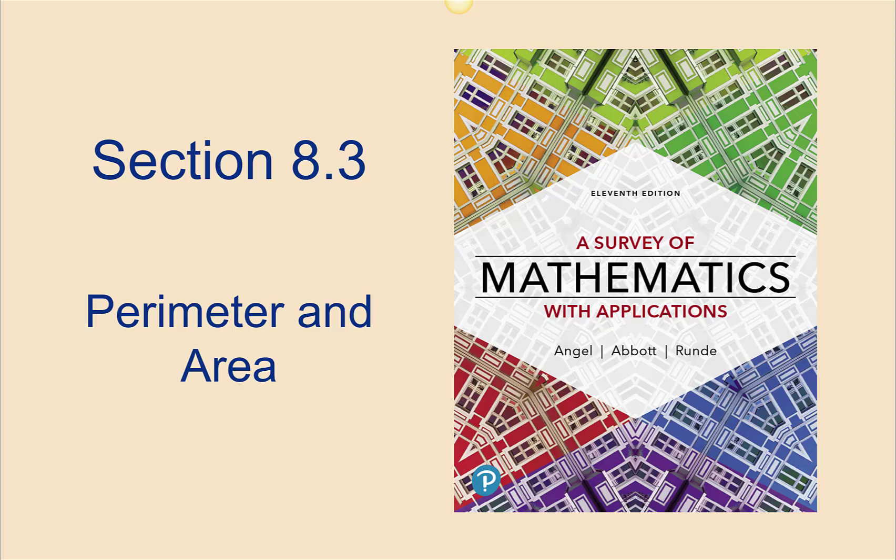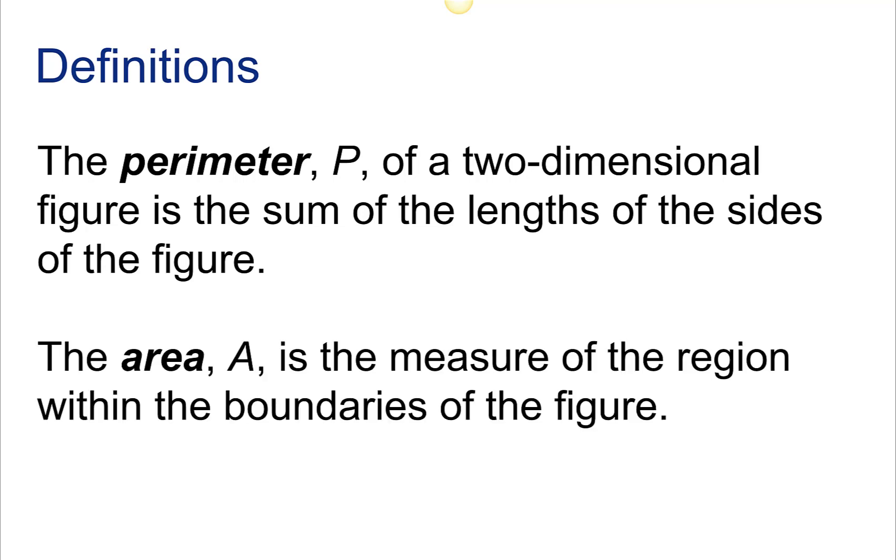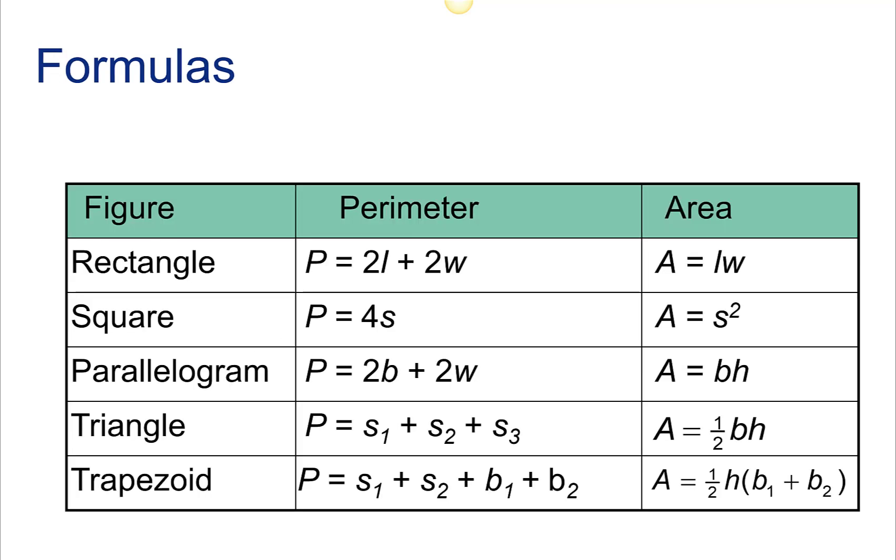Section 8.3, Perimeter and Area. The perimeter of a two-dimensional figure is the sum of the lengths of the sides of the figure. The area is the measure of the region within the boundaries of the figure.